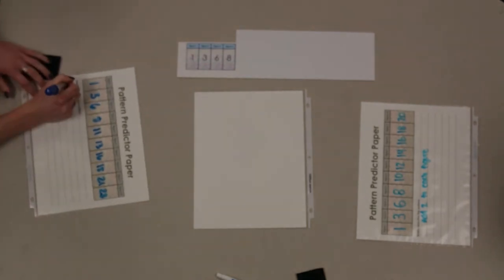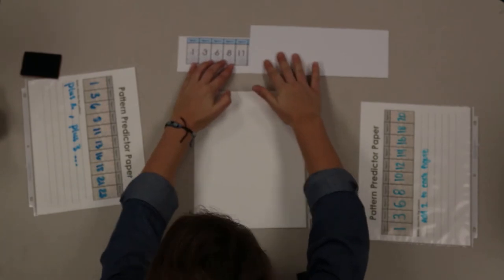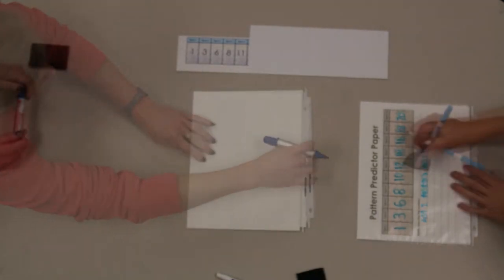When all pairs agree that they want to see the next figure, pull the pattern strip so the next figure is revealed. Repeat this until all pairs have submitted a pattern prediction.